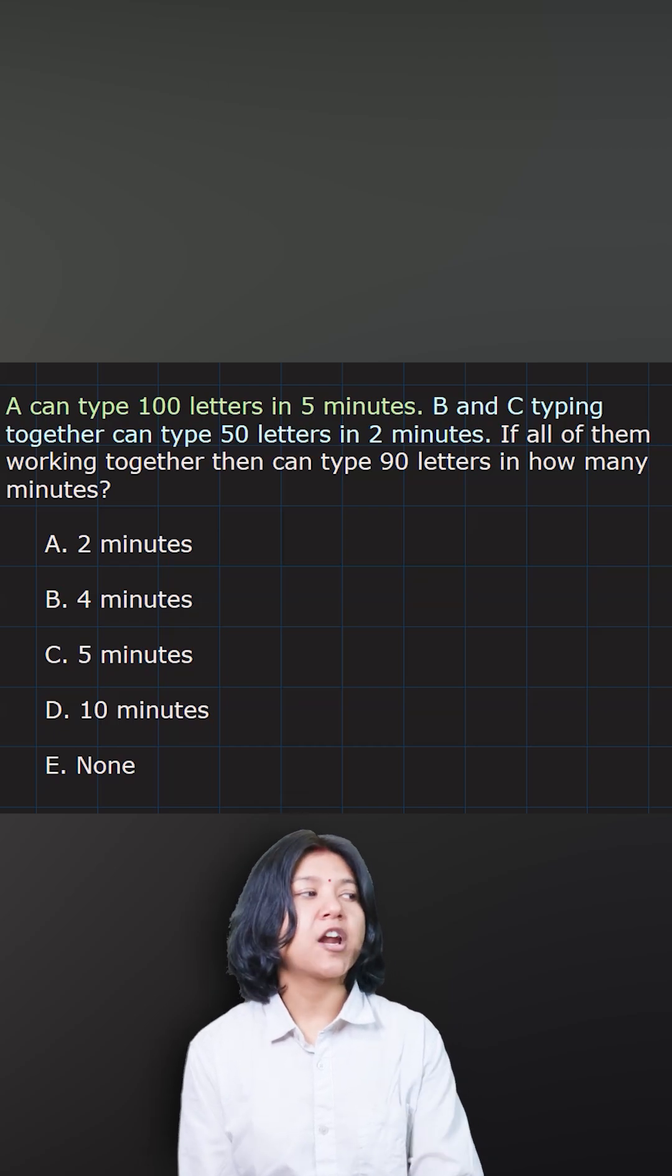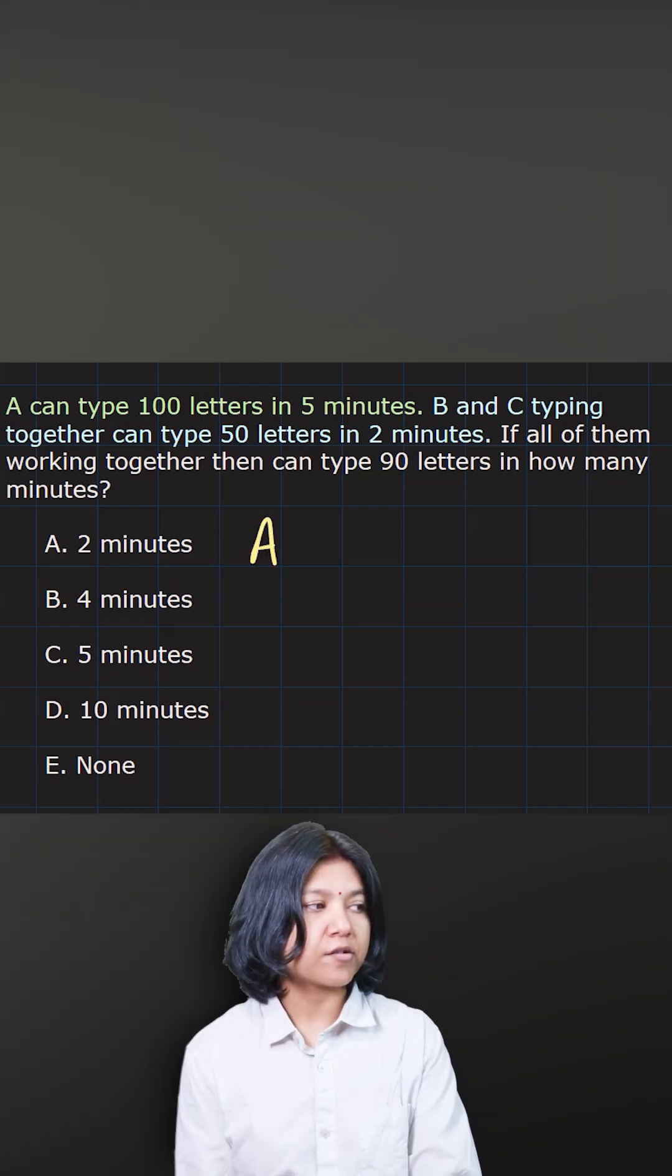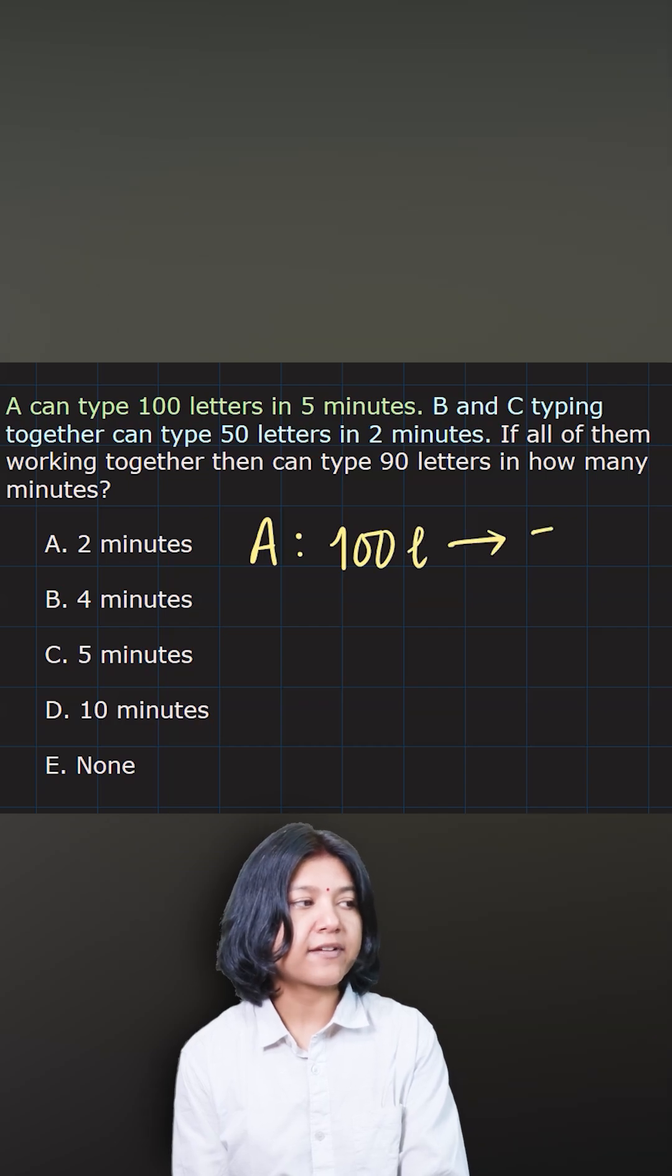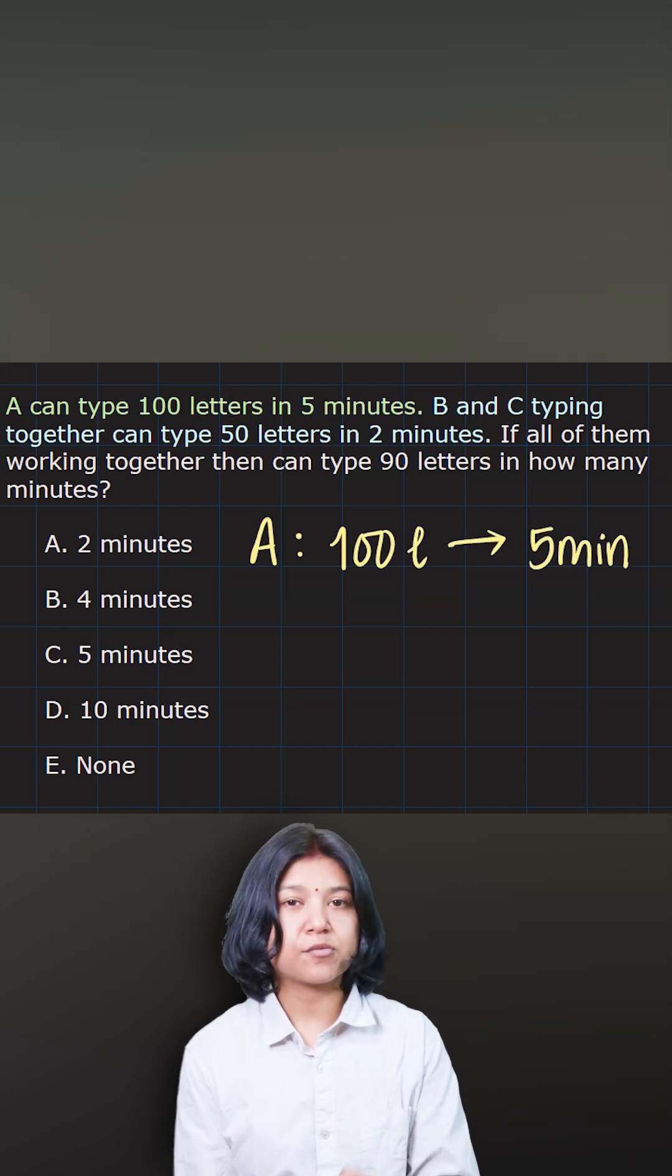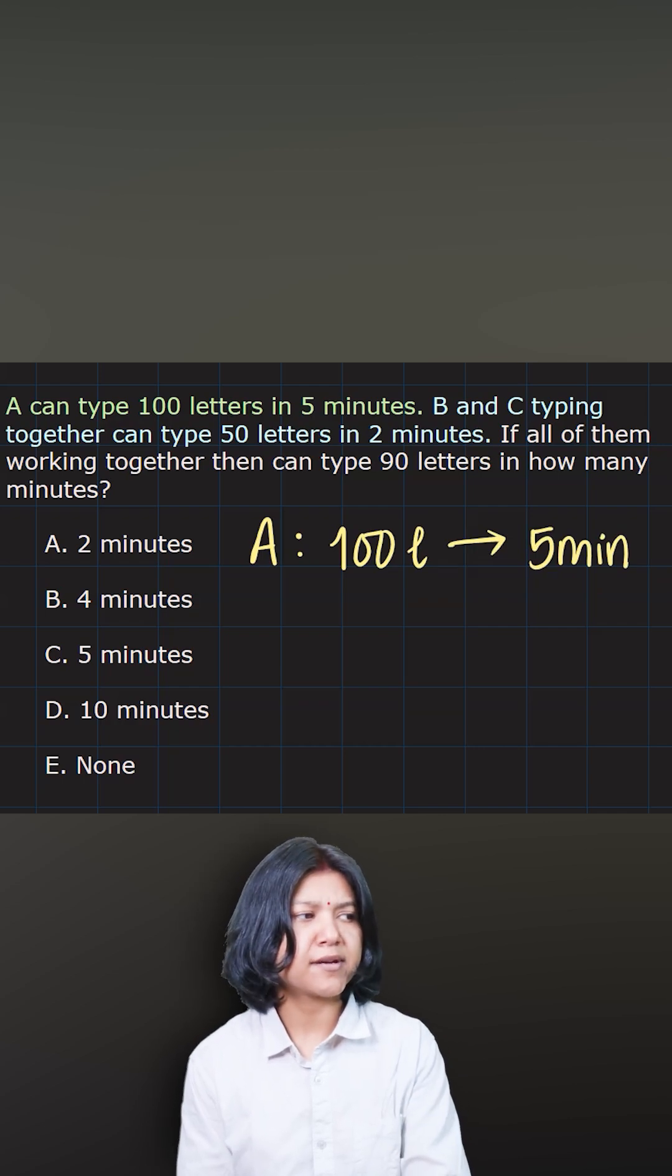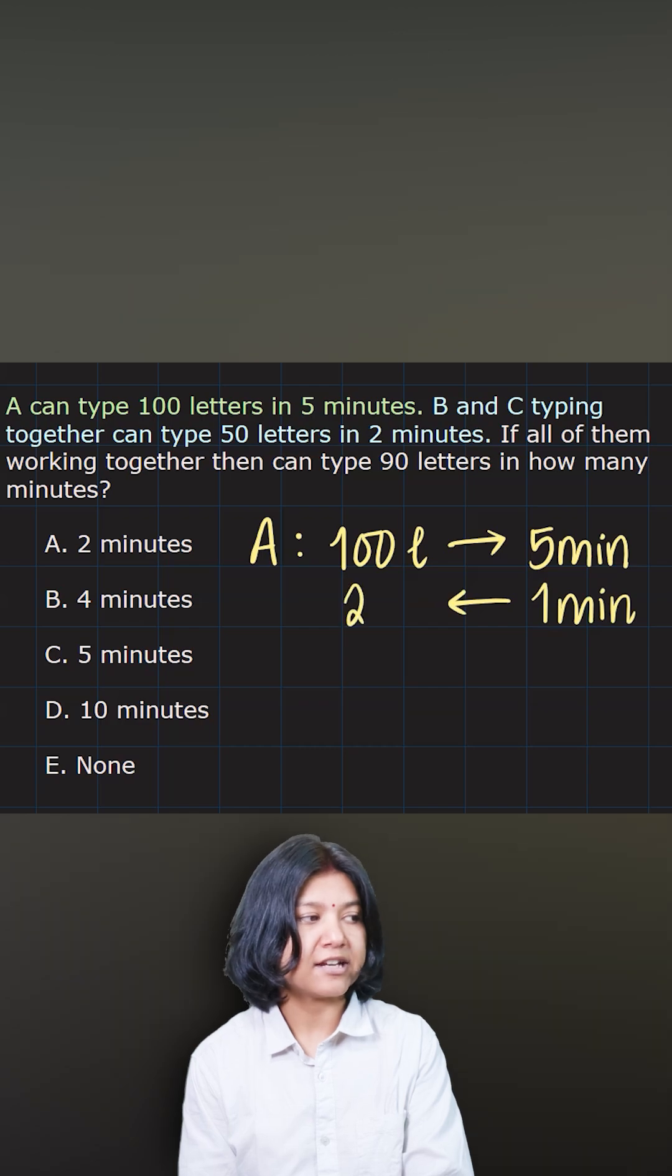Given to you, person A types 100 letters in 5 minutes. So 100 letters covered in 5 minutes, we can always find out 1 minute work. Because here we have all values I can completely reduce, I'll divide both sides by 5 to find out 1 minute work of A. So in 1 minute, it will cover 20 letters.